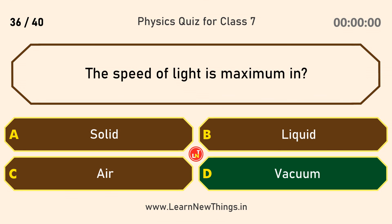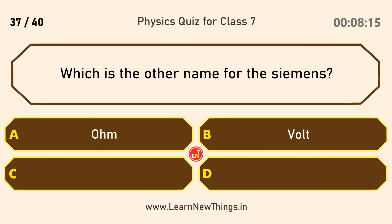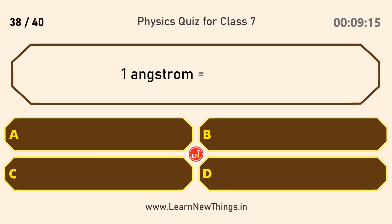Which is the other name for the Siemens? Mho. 1 angstrom is equal to 0.1 nanometers.